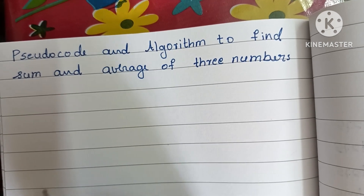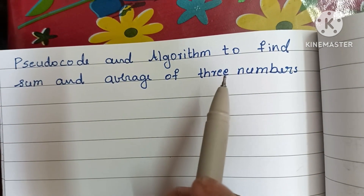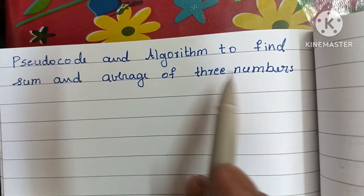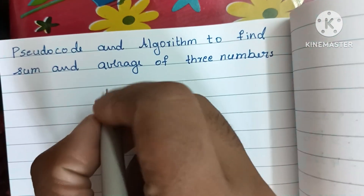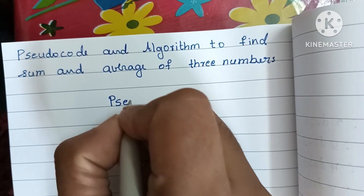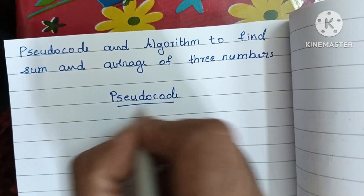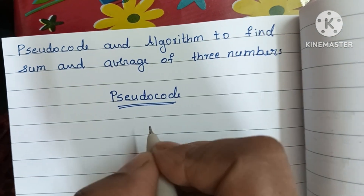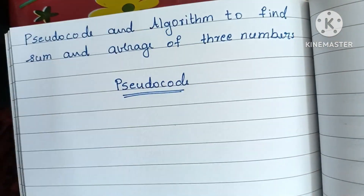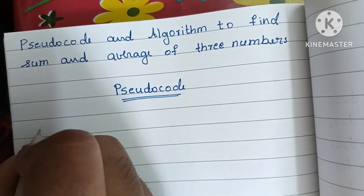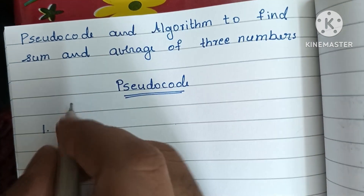Hi guys, in this video we're going to learn how to write pseudocode and algorithm to find sum and average of three numbers. Pseudocode is a detailed description of a solved problem — it is in a user-readable form, written in natural language like English.